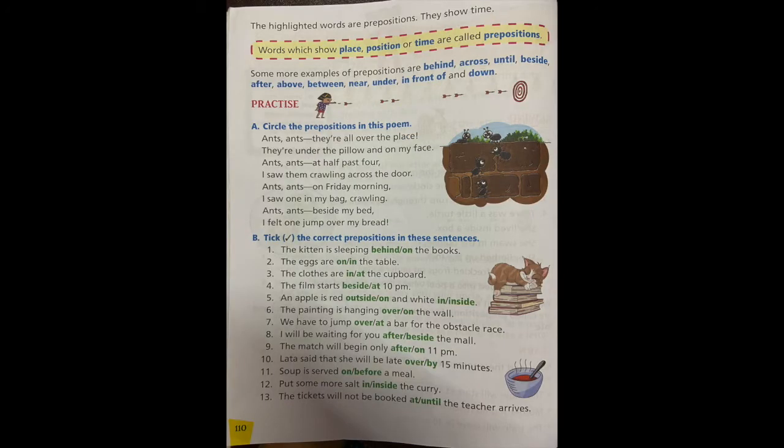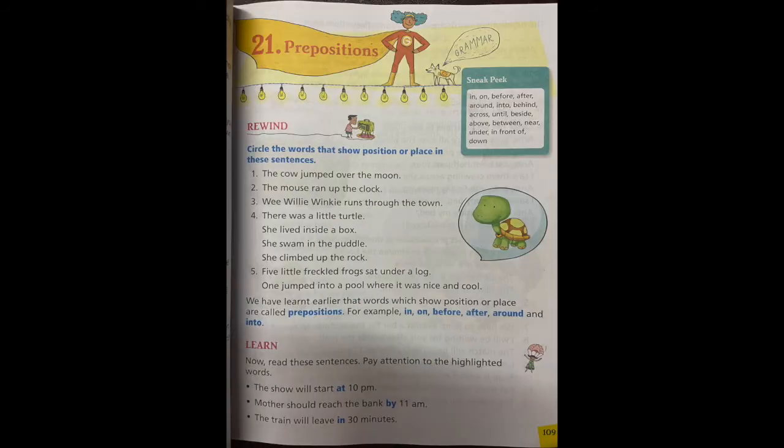Now prepositions also show us place, position, and also the time - that when something is happening. Look at page 110. Let's read what is written in the box: words which show place, position, or time are called prepositions.